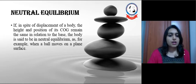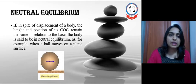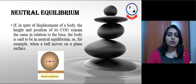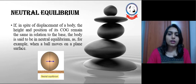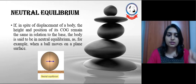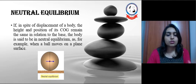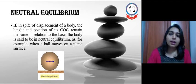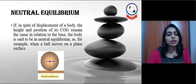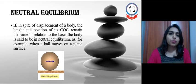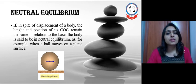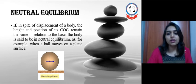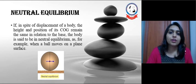For example, if a ball moves on a plane surface, we can find neutral equilibrium in it as center of gravity is going to be at the same level to the ground. The base is also going to be the same and LOG is going to fall within the same base of support every time, even if the ball is moving. Then this position is known as equilibrium and the type is neutral equilibrium.